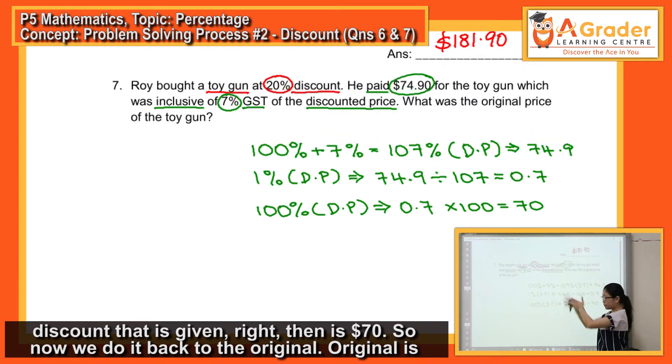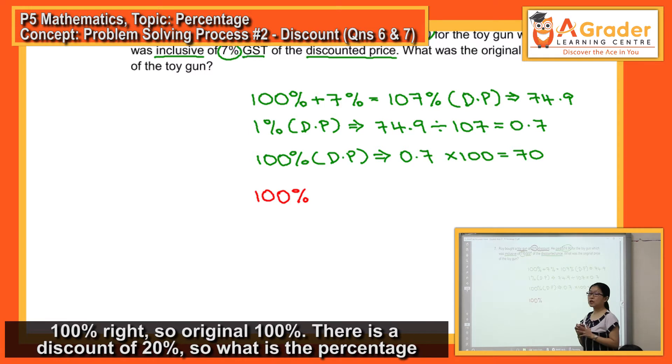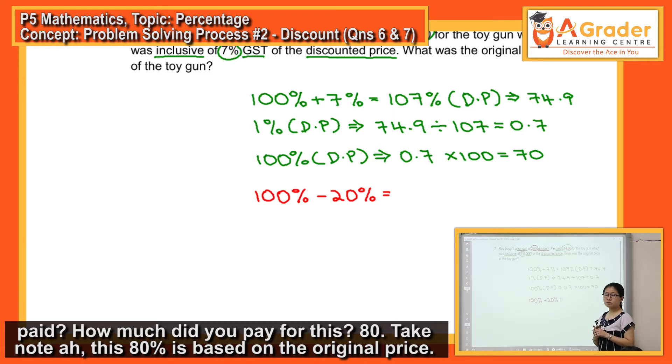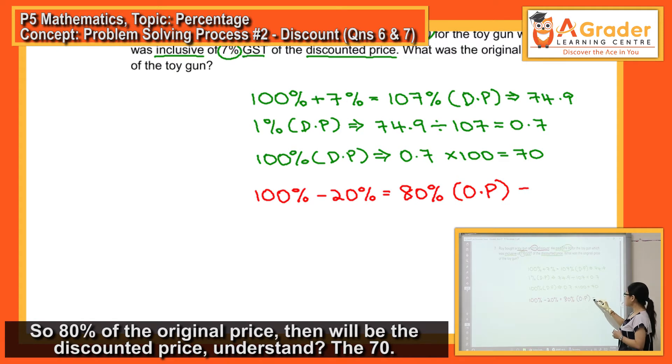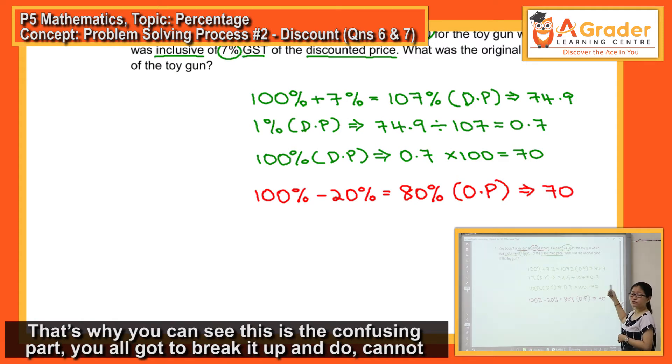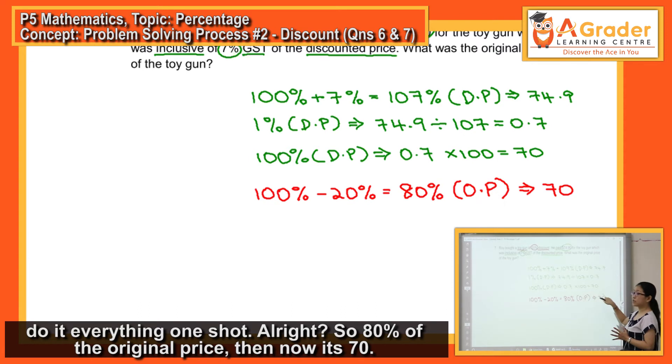So, now we do it back to the original. Original is 100%. So, original 100%. There's a discount of 20%. So, what is the percentage paid? How much do you pay for this? 80. Take note, this 80% is based on the original price. So, 80% of the original price, then will be the discounted price. The $70. That's how you can see, this is the confusing part. You all got to break it up and do. You cannot do it everything one shot. So, 80% of the original price, then now it's $70. Then, repeat the 1% weight. 1% based on the original price.